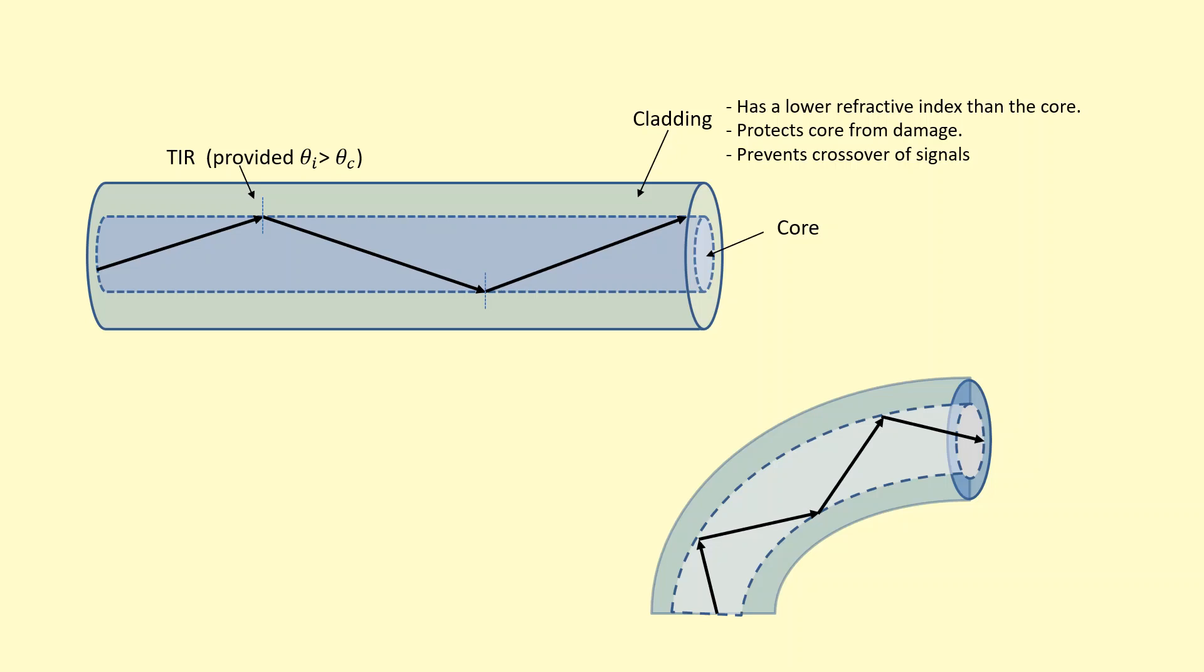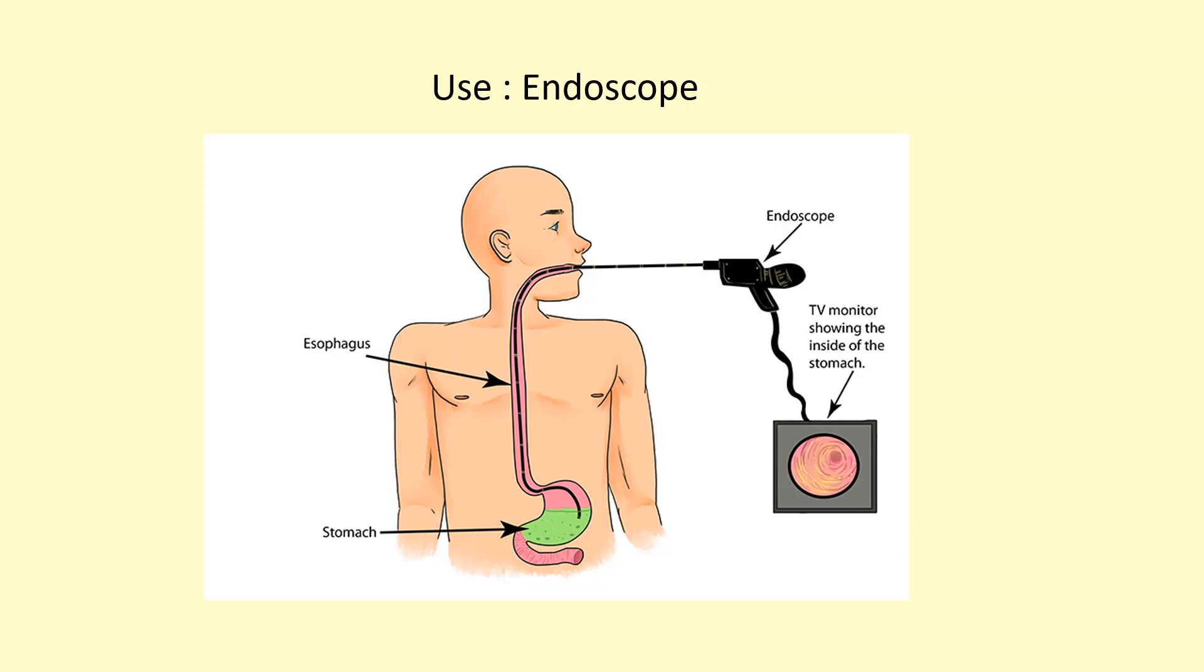So one of the uses of optical fibers is in endoscopes. Endoscopes can be used to see inside people. You send some light down one optical fiber and that will reflect off organs inside, for example, the stomach in this case. And then once it reflects off, they can go up through a different optical fiber and then it can be seen on the monitor down here.